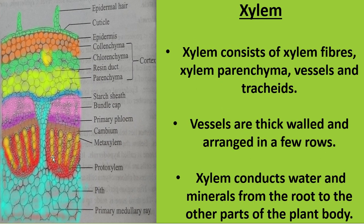The yellow colored cells are the xylem. Xylem contains xylem fibers, xylem parenchyma, vessels, and tracheids. The vessels are thick-walled and arranged in a few rows. Xylem conducts water and minerals from the root to other parts of the plant, whereas phloem transfers food from the leaf to other parts of the plant body.